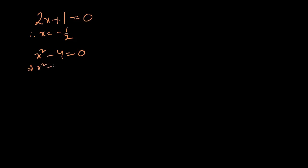We write x squared equals 4, therefore x equals plus or minus the square root of 4. So we have two values: x equals positive 2 or minus 2. When we have a linear equation we have one value of x, and when we have a quadratic equation we have two values of x. We can also have a cubic equation and so on. An equation means the relationship between an unknown quantity x and a known quantity — that's how we find the unknown value.